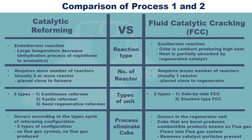As for the number of reactors used, the catalytic reforming system requires more reactors compared to the FCC. The catalytic reforming system usually has three or more reactors placed close to the furnace, while the FCC usually has only one reactor placed close to its regenerator. There are three types of catalytic reforming configurations: continuous reformer, cyclic reformer, and semi-regenerative reformer. There are two types of FCC configurations: side-by-side FCC and stack-type FCC.